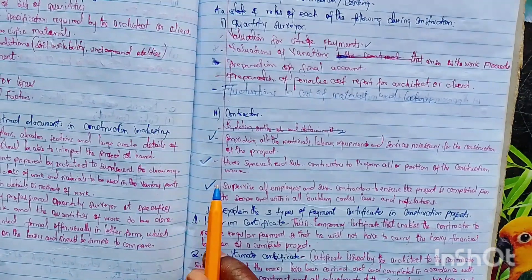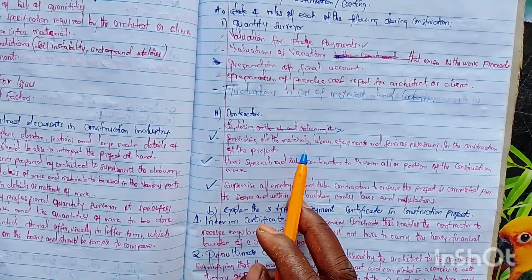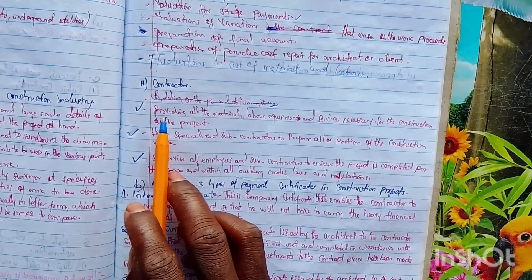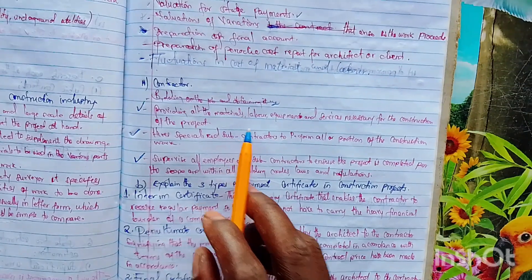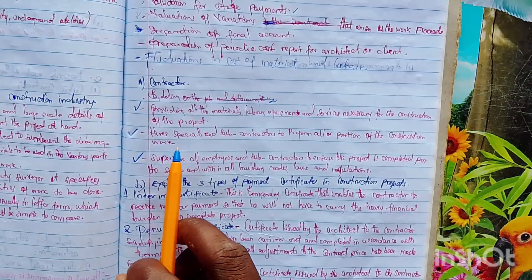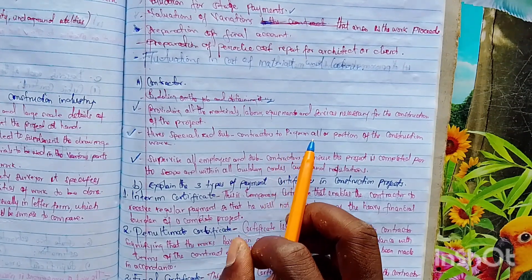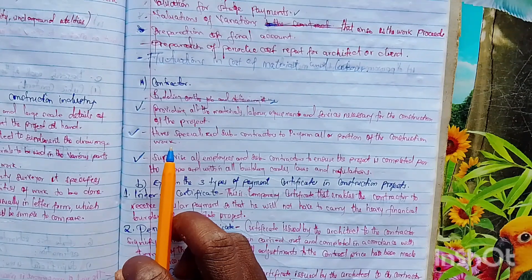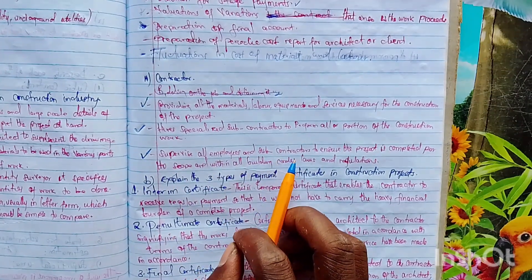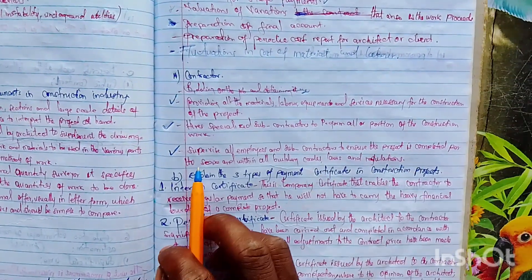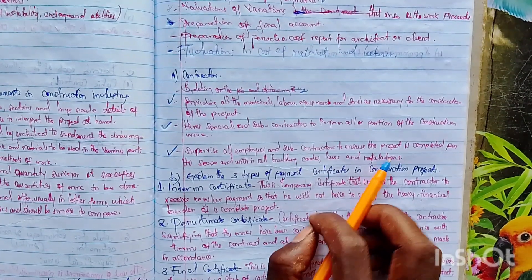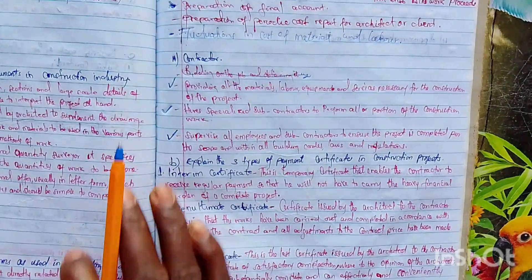The second part: roles of a contractor during construction. Number one — providing all material, labor, equipment and services necessary for the construction of the project. Number two — the contractor hires specialized subcontractors to perform all or a portion of the construction work. Number three — the contractor supervises all employees and subcontractors, ensuring the project is completed per the scope and within all building code laws and regulations.